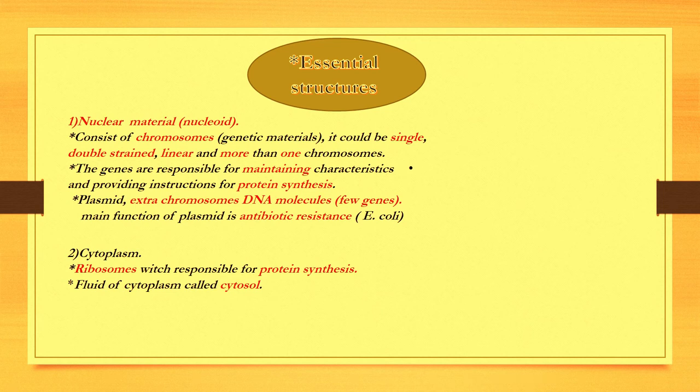As for genes, they are also responsible for making the important proteins that take up space in the division. There are bacteria that contain plasmid, which is an extra chromosome with a few genes. Its function gives the probability of bacteria resistance to antibiotics.